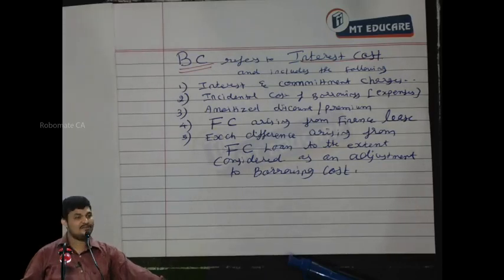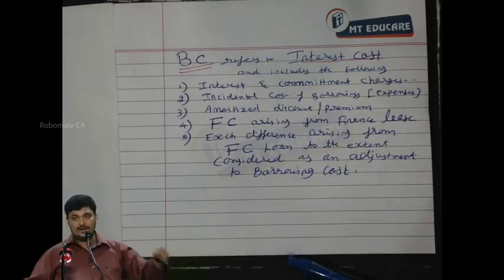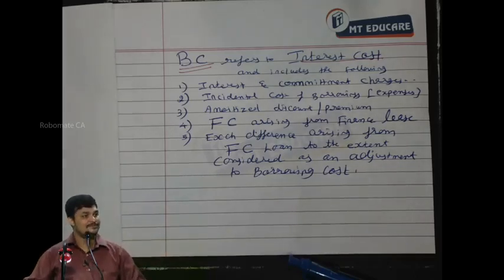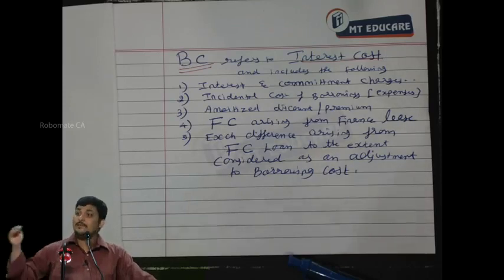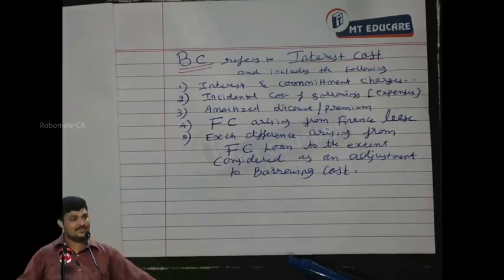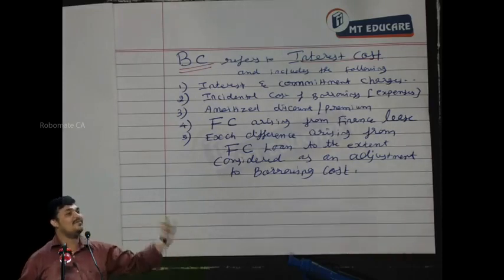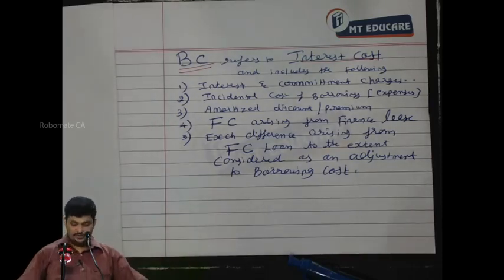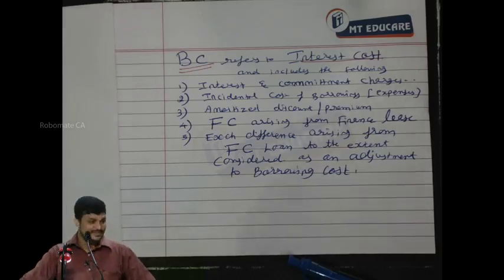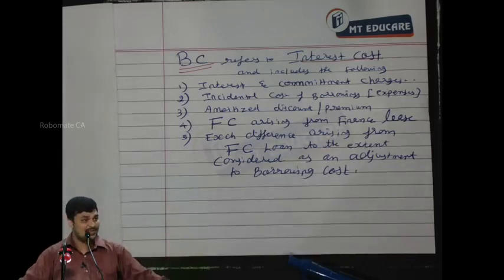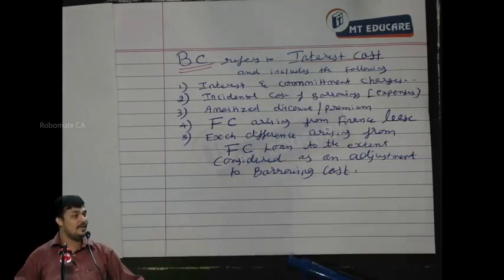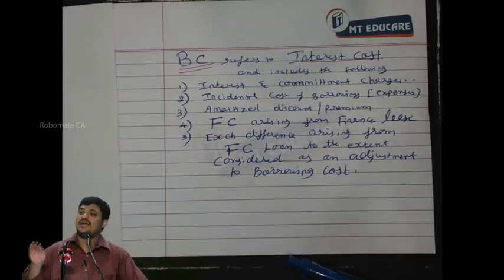Incidental costs of borrowing include expenses like debenture issue expenses. For amortized discount or premium: when debentures are issued at a discount, that discount is also considered borrowing cost as per AS 16. Debenture is a type of borrowing, and any debt instrument — not just bank borrowing — qualifies. Such discount should form part of borrowing cost, not be shown as miscellaneous expenditure.